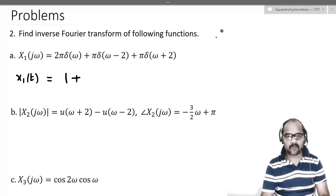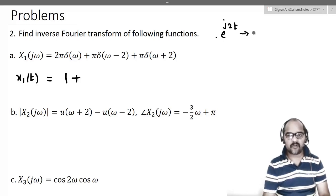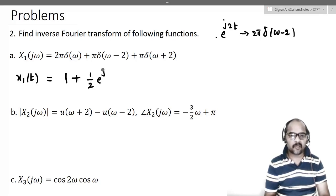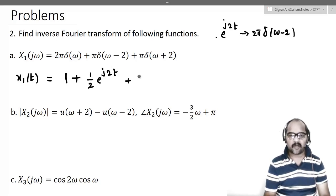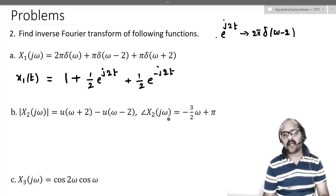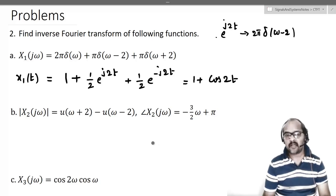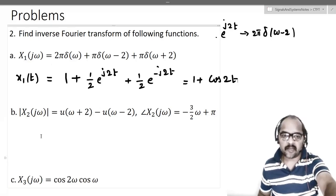I will write that down here. If you remember, e^(j2t) will have 2π·δ(ω−2), but we have π here and hence we should divide by 2. So (1/2)e^(j2t) will have π·δ(ω−2). Similarly, (1/2)e^(−j2t) will have π·δ(ω+2) as the inverse Fourier transform. You can simplify and see that this is nothing but 1 + cos(2t). That is the signal x1(t) which will have x1(jω) as its Fourier transform.